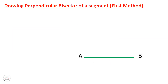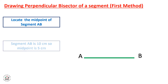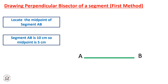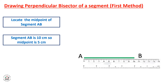Now let's learn how we can draw a perpendicular bisector of a segment using a ruler and set square, which will be the first method. First, we need to locate the midpoint of segment AB using a ruler to measure its length. If the length of segment AB is 10 cm, the midpoint will be at 5 cm from point A.